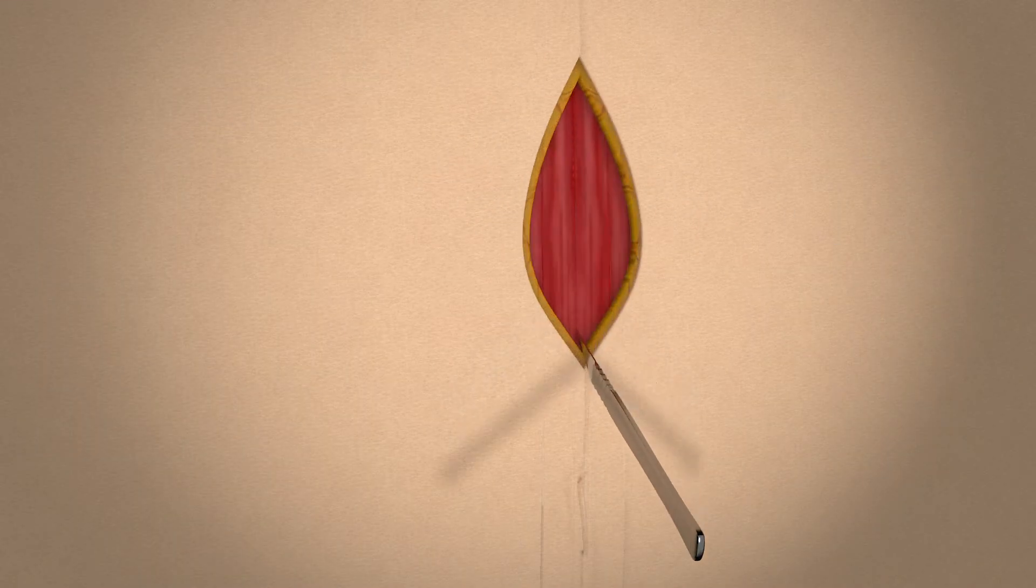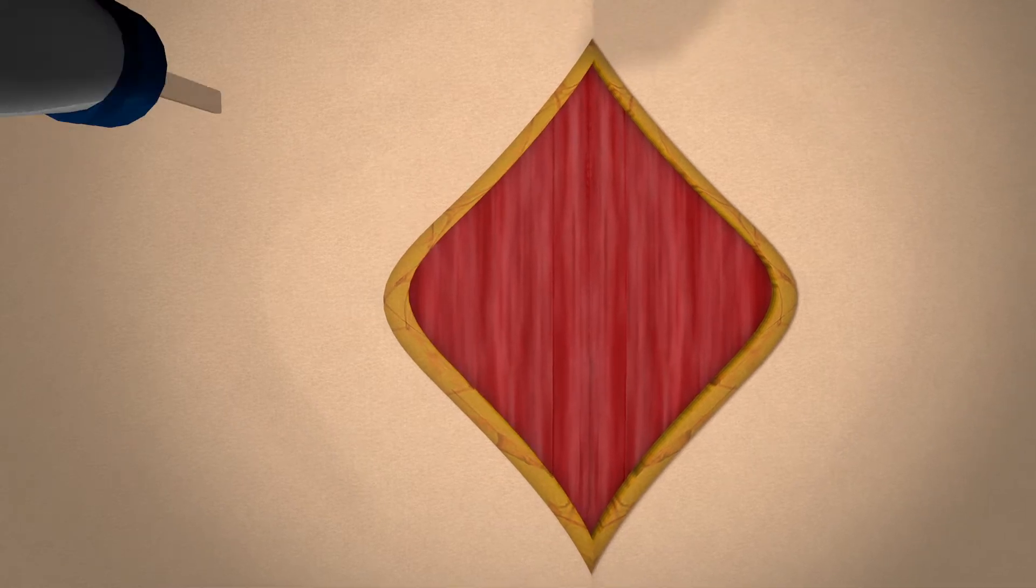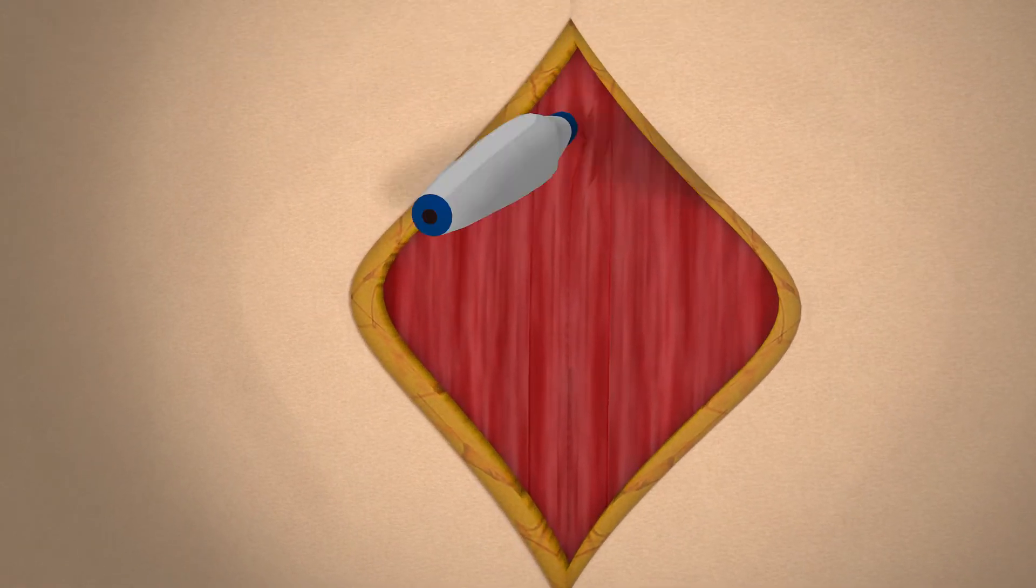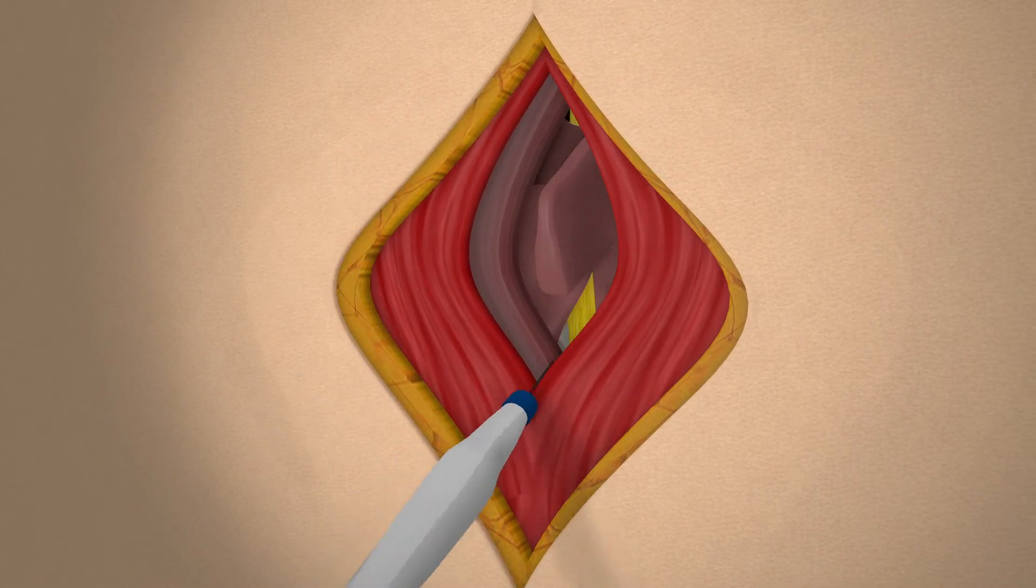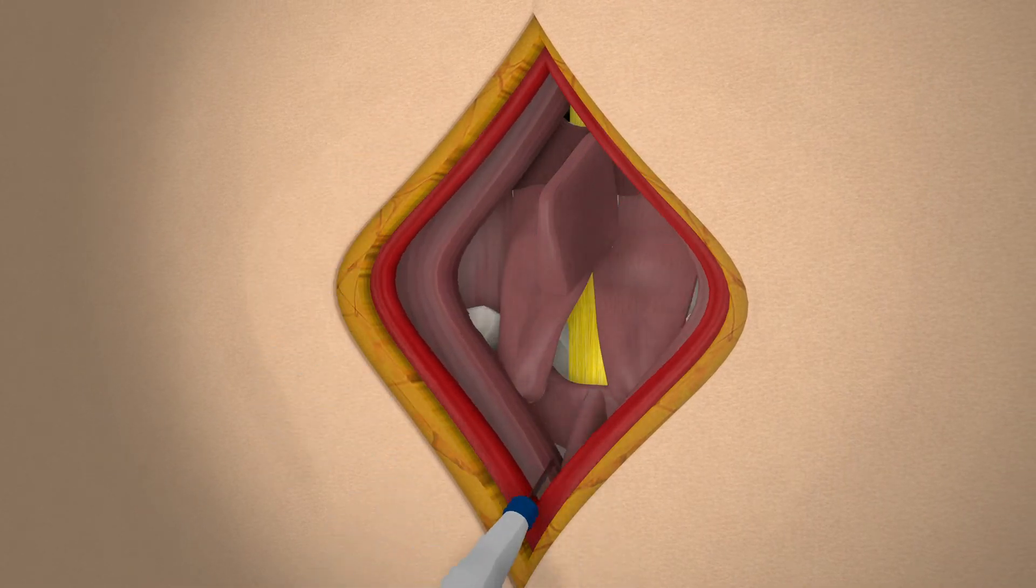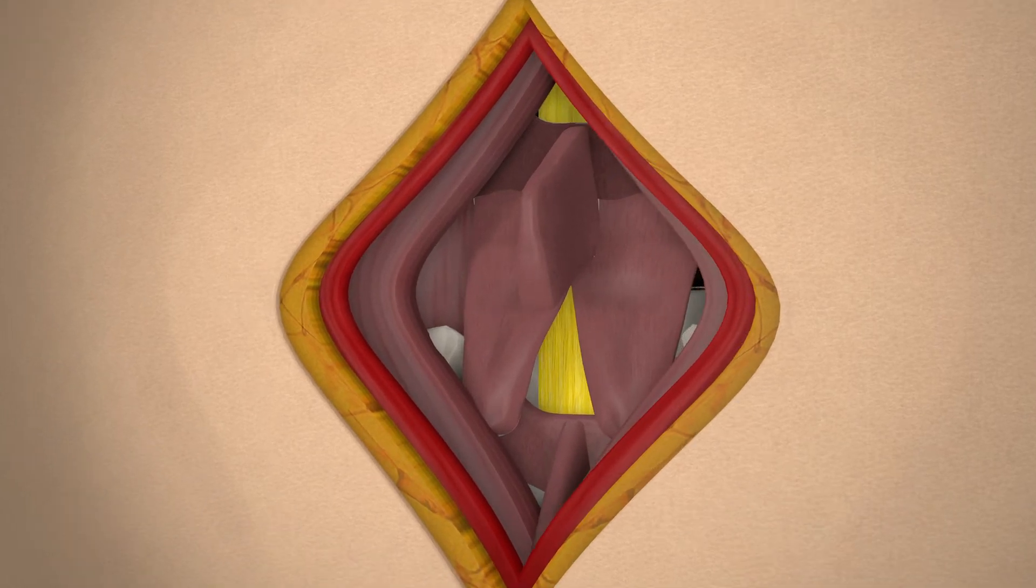The first incision will be from the L4 to L5 region on the posterior portion of the back. Electrocauterization will be used to cut deeper through muscles and to clean around the vertebral body. This tool is used to reduce bleeding from surgery, remove abnormal tissue growth, and prevent infection.